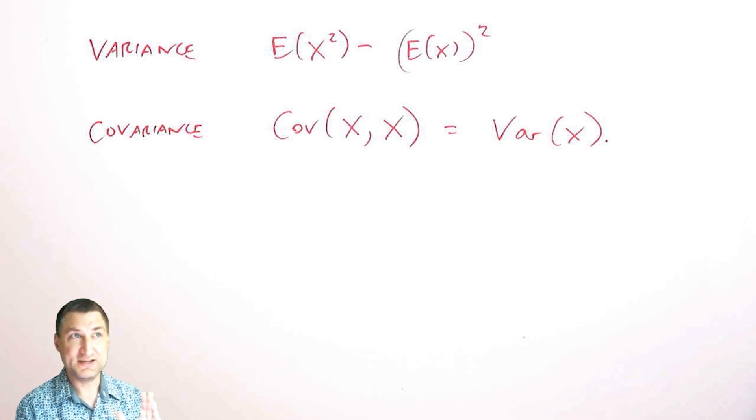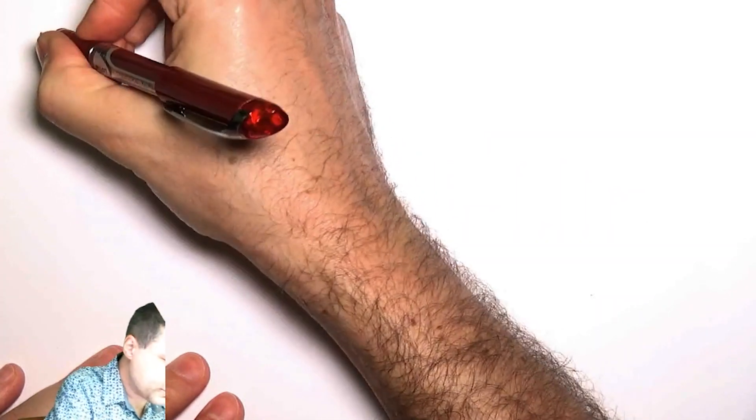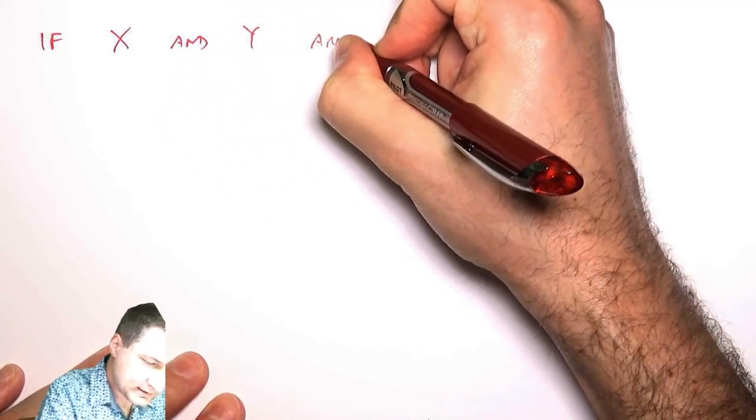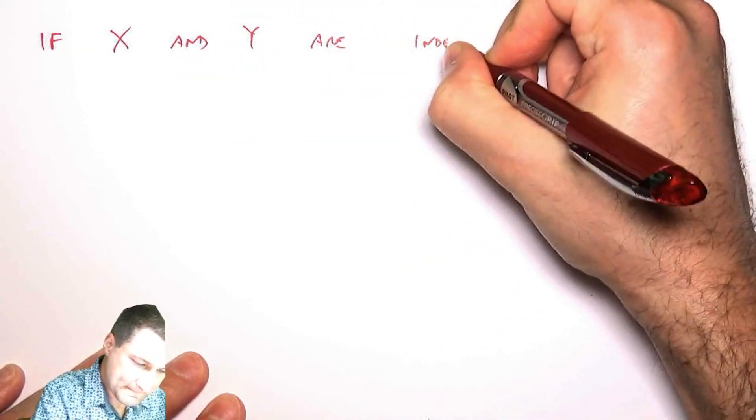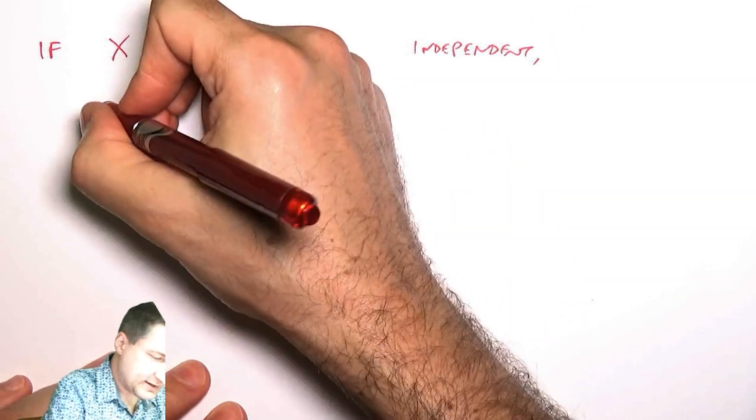Last time we talked about this idea of independence. So if X and Y are independent, what happens? So let me write that on a separate sheet. So if X and Y are independent, let's work out what that integral would look like.